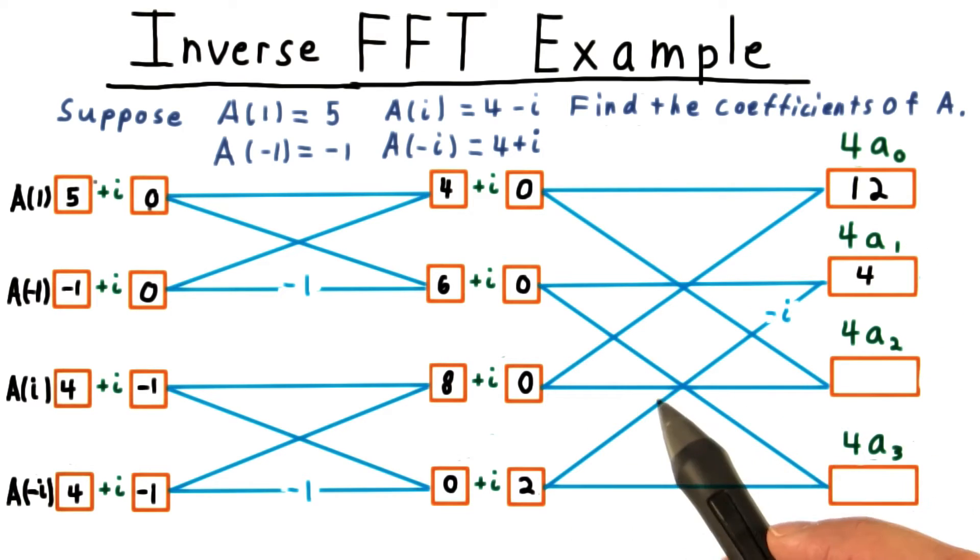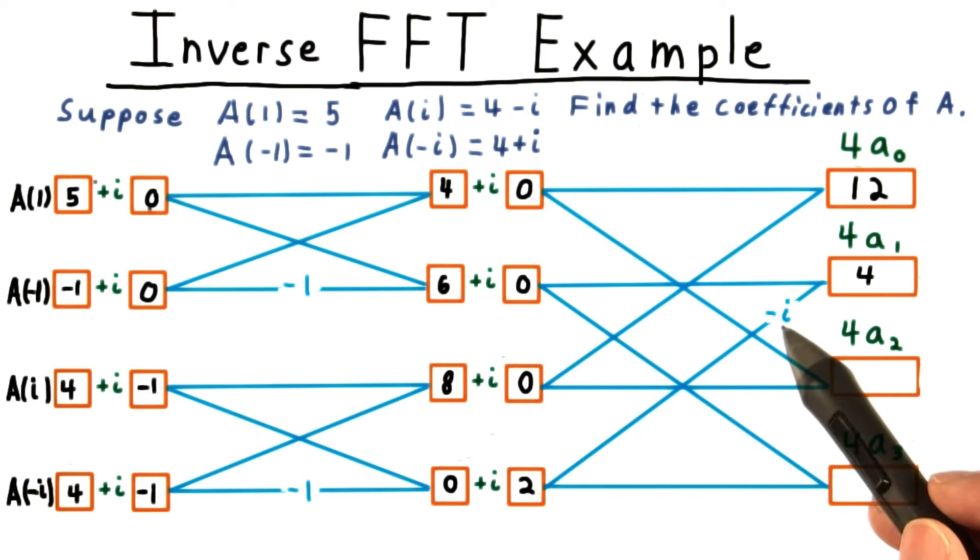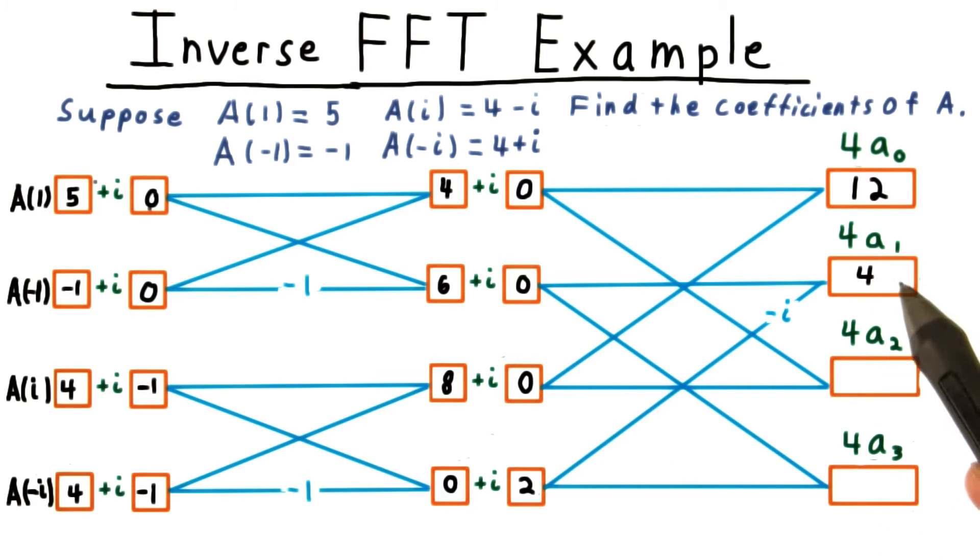Then for this next one, we want omega to the first power times this. And because we're doing the inverse transform, that omega is negative i, and that gives us this result here of 4.